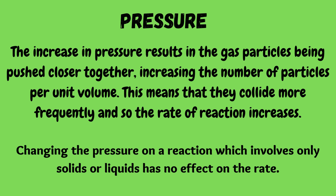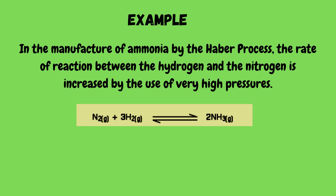The next factor is pressure. An increase in pressure results in gas particles being pushed closer together, increasing the number of particles per unit volume. This means they collide more frequently and so the rate of reaction increases. Changing the pressure on a reaction involving only solids or liquids has no effect on the rate. For example, in the manufacture of ammonia by the Haber process, the rate of reaction between hydrogen and nitrogen is increased by the use of very high pressures: N₂ + 3H₂ → 2NH₃.